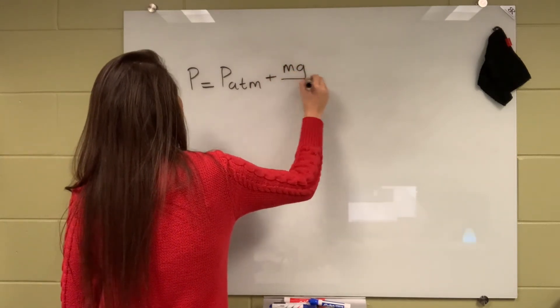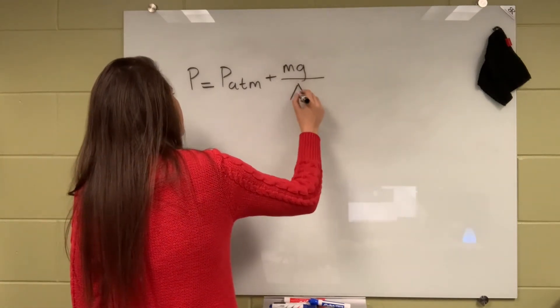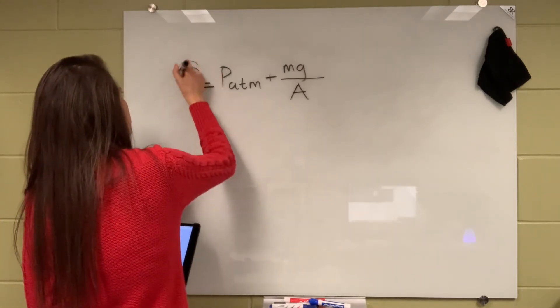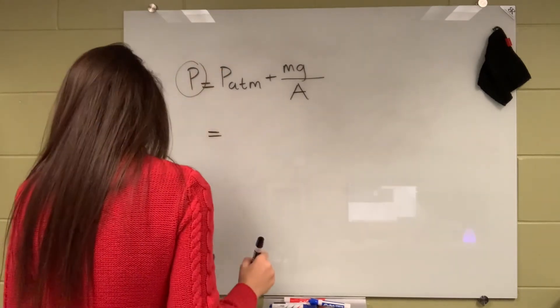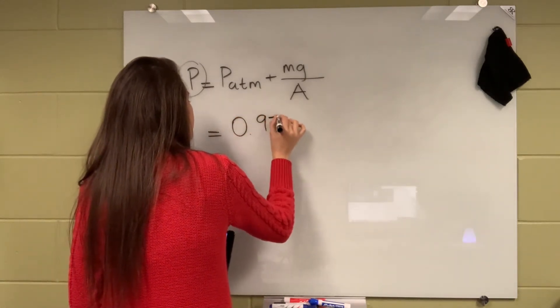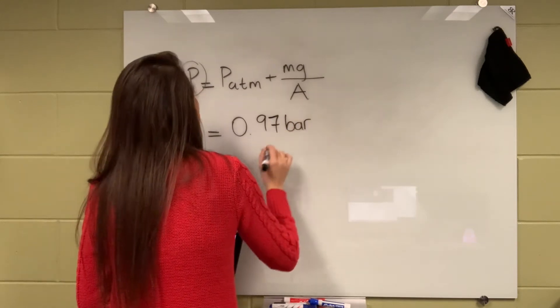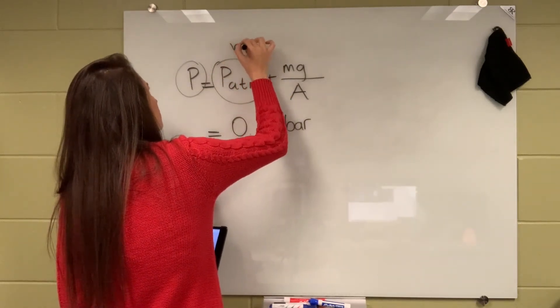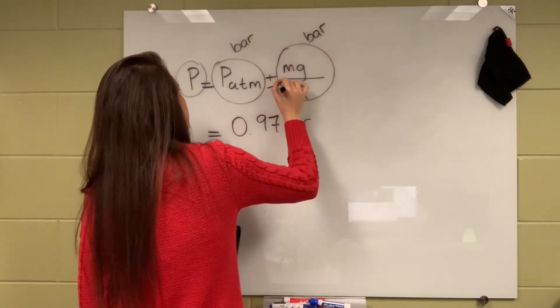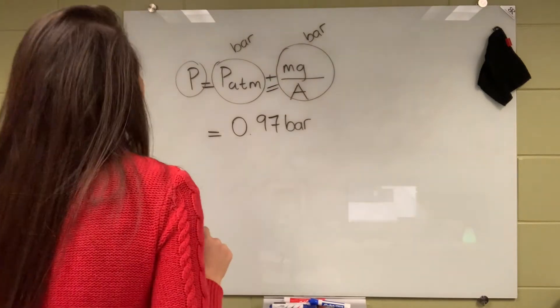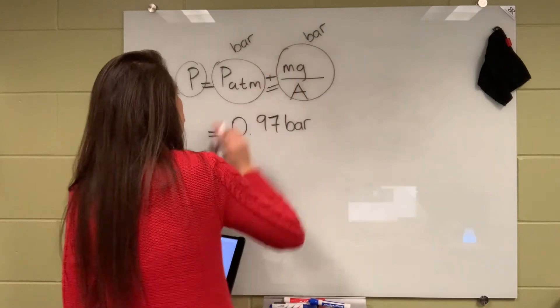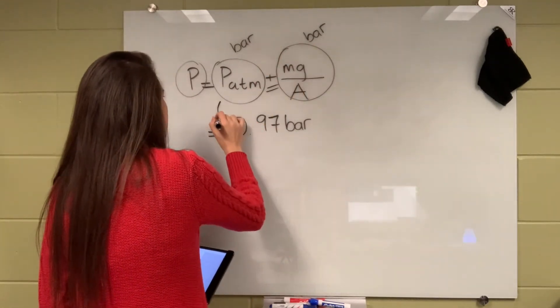Weight is m times g. This was what I'm trying to calculate. Atmospheric pressure is given in terms of bar, so if this is in units of bar, then this has to be in the units of bar so that I can sum those up. All terms in your equation have to have the same unit, and this is given to us like that.